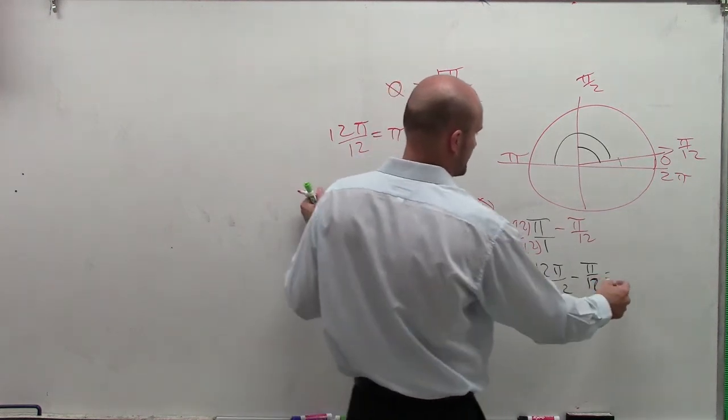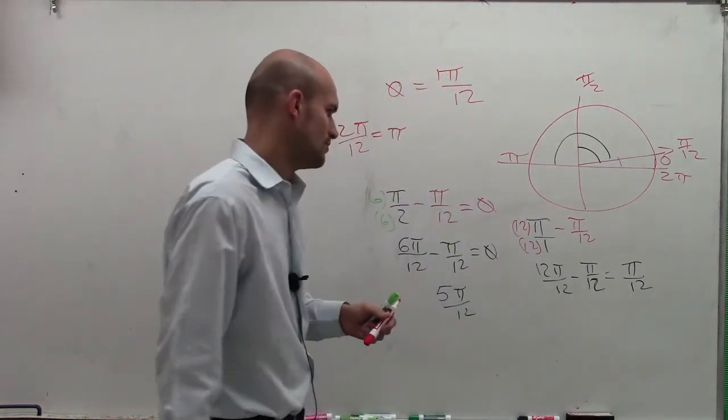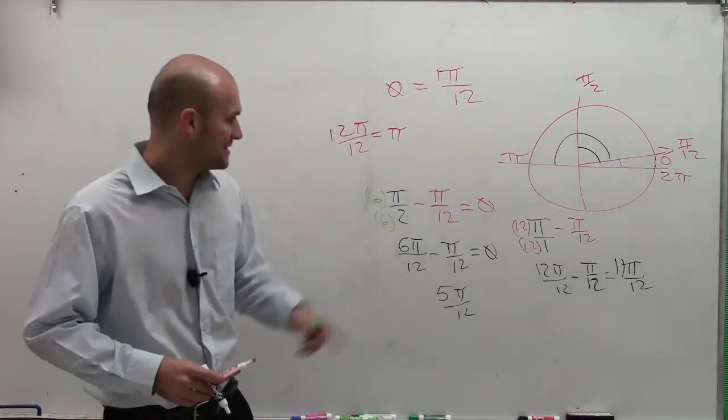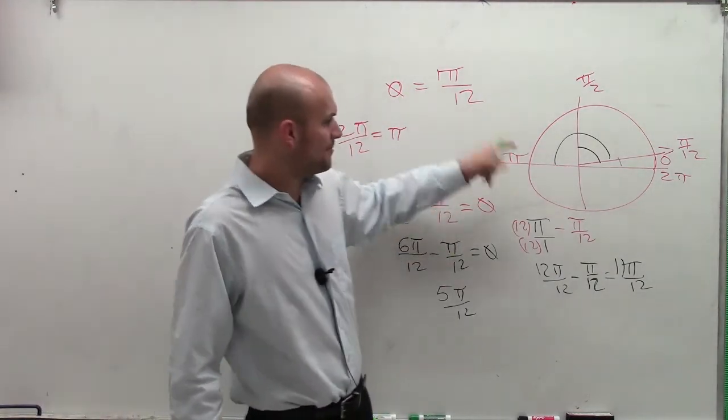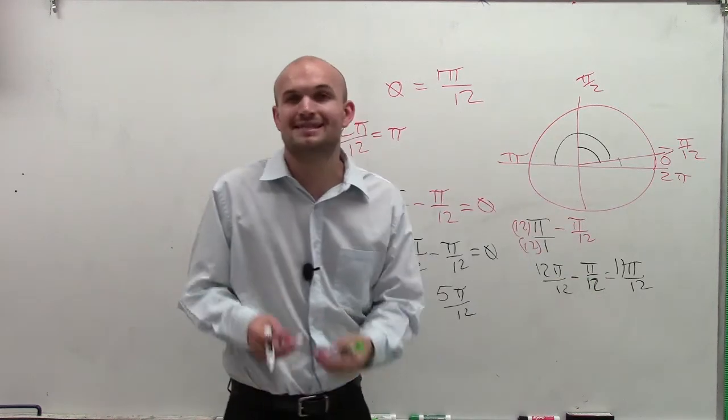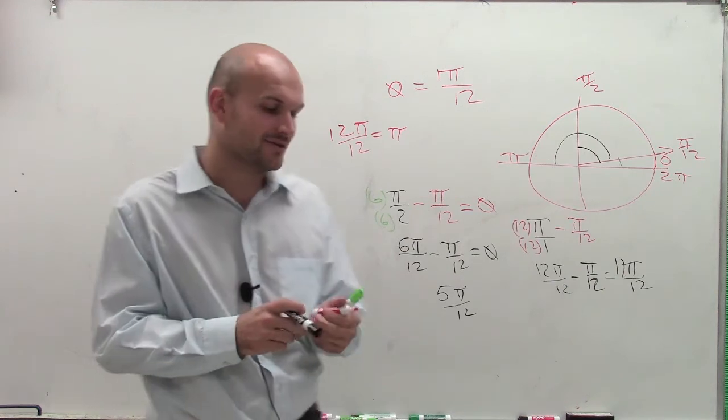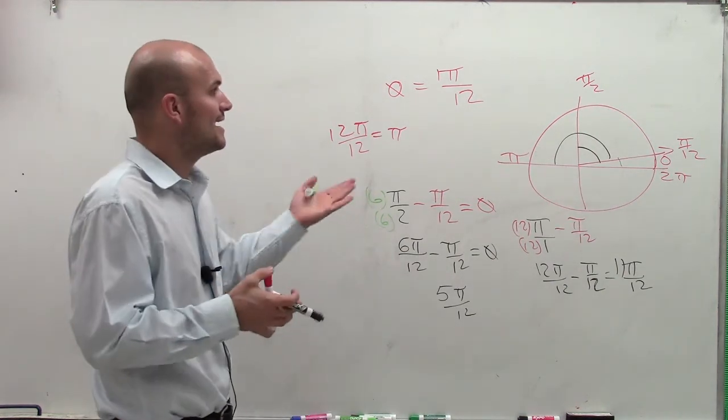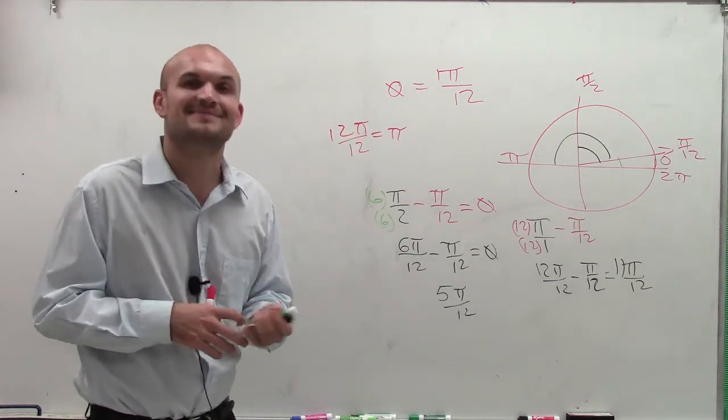which equals pi over 12. No, that's wrong. 11 pi over 12. So therefore, the complementary angle of pi over 12 is 5 pi over 12. And the supplementary angle of pi over 12 is 11 pi over 12. So therefore, ladies and gentlemen, that's how you find complementary and supplementary angles. Remember, complementary angles add up to 90, or pi over 2. And supplementary angles add up to 180, or in this term, pi. Thanks.